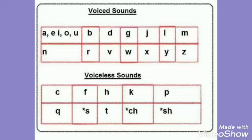The sounds in English are divided into voiced sounds and voiceless sounds. Voiced sounds are produced with voice — they are produced with vibration on the vocal cords.